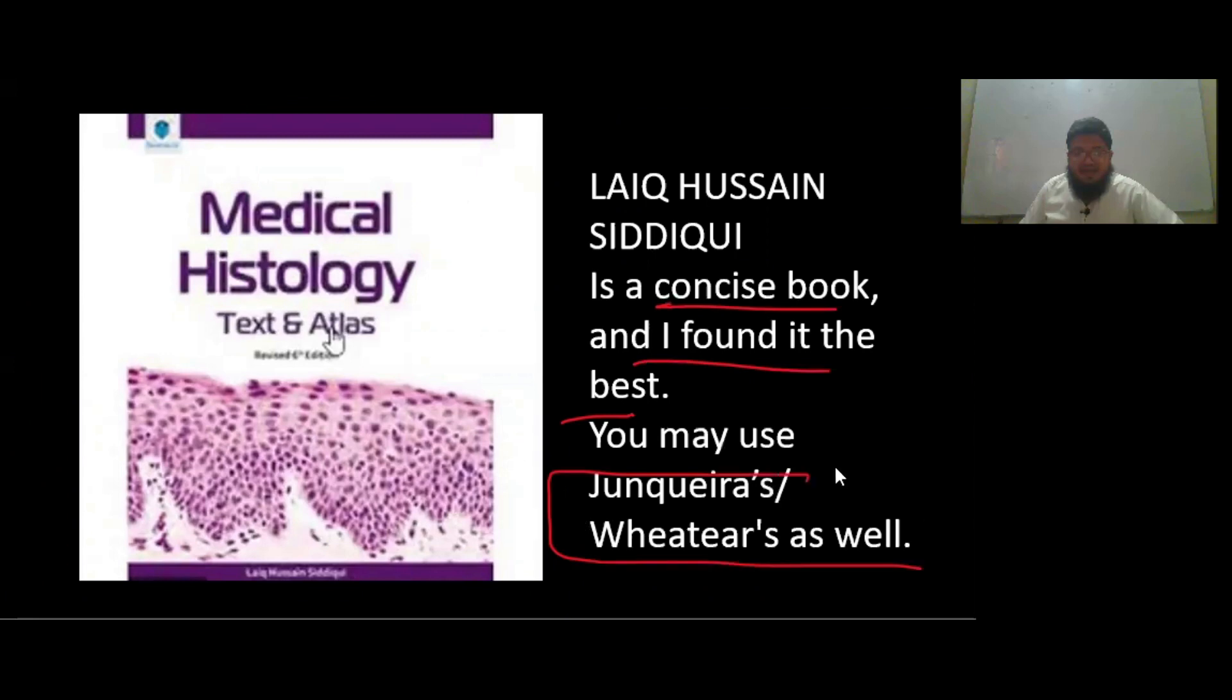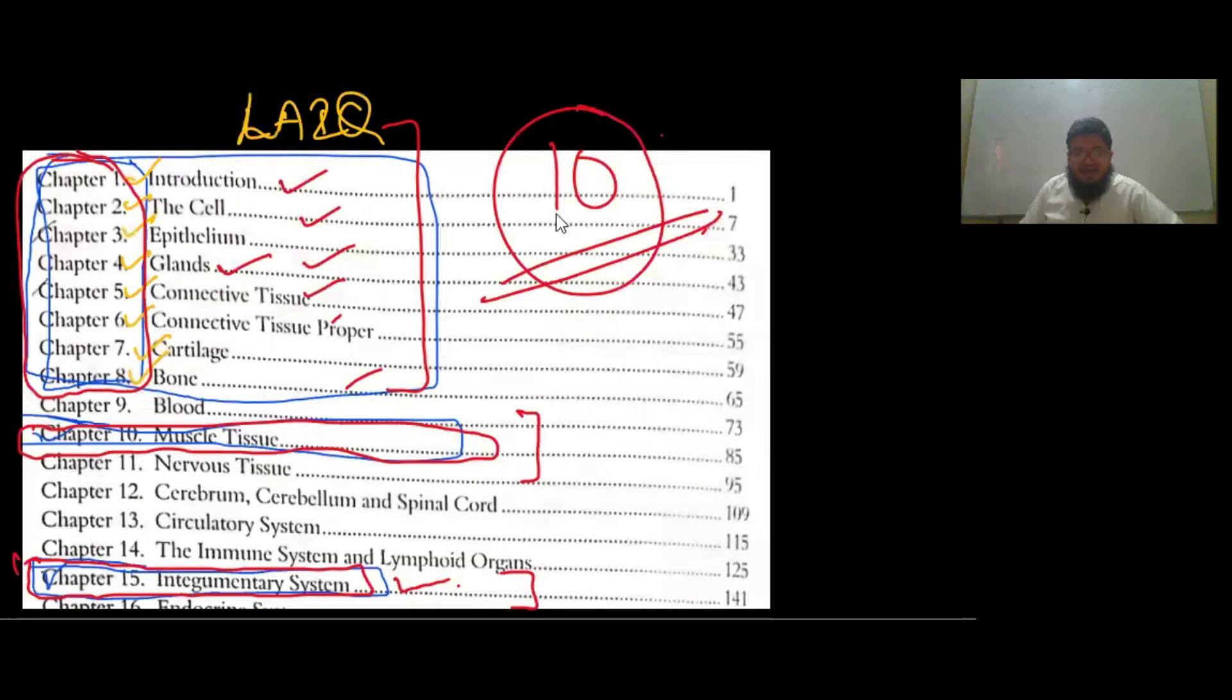You may use Junquera's or Wheater's Atlas as well—these are the two other books you can use. These are big books. Junquera is a very big book, and Wheater's is also a good book. You can refer to either of them, but Likosit Siddiqui covers almost everything, so you don't need to go to them. If you do find any topic confusing, you can refer to Junquera, but generally you don't need to because all the stuff is written so beautifully in Likosit.